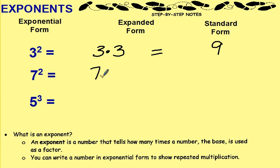7 to the second power would be 7 times 7. So however many times the exponent is, that's how many times you write the base and multiply it. 7 times 7, of course, is 49.